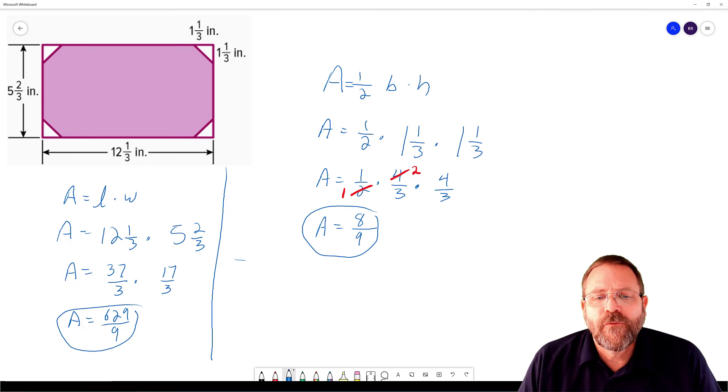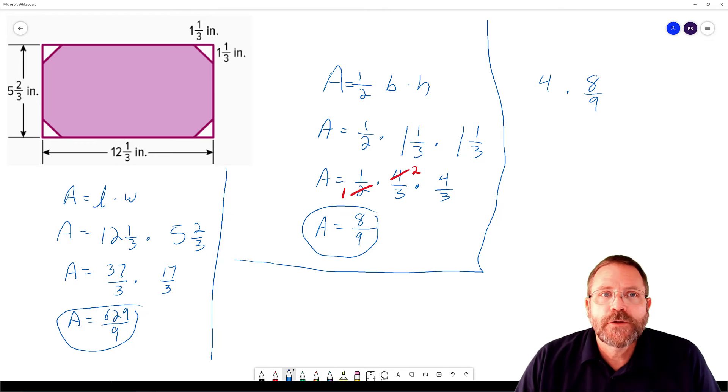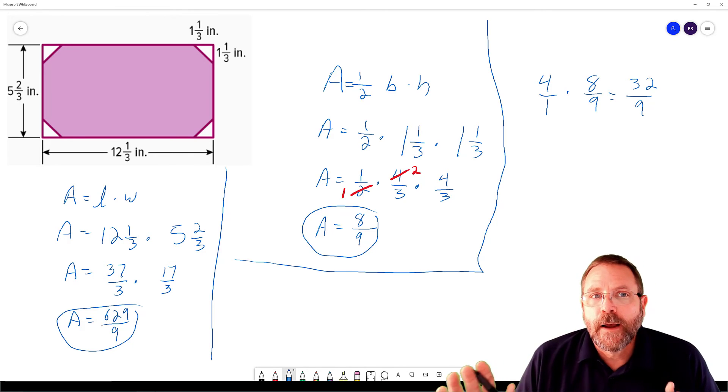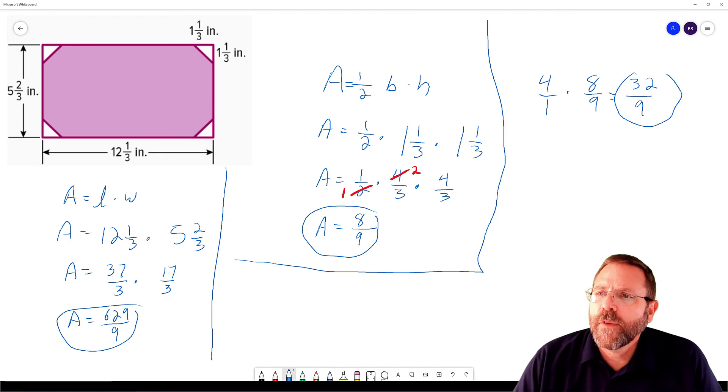But that is only one of those triangles and I have 4 of them. So the next thing I'm going to do is multiply that times 4. So I have 4 triangles at 8/9ths of an inch for each one, make an improper fraction, multiply that out, and now I'm looking at 32 over 9 is going to be the area of the entire triangle collection that we're subtracting.